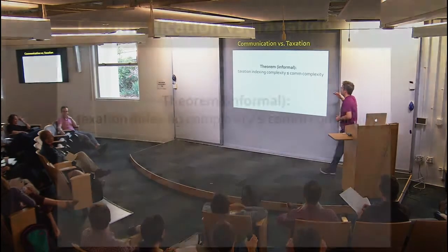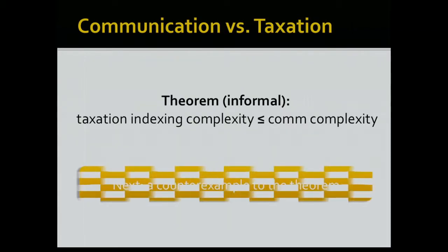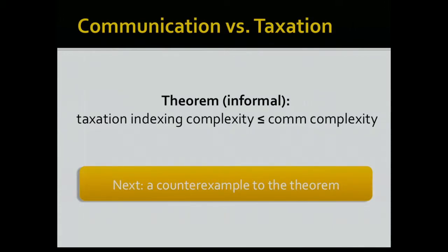The main theorem says, informally, that the taxation indexing complexity is at most the communication complexity of the mechanism. This is the main connection between the two notions. I plan to discuss some applications and extensions of this theorem, and also prove it. But first, let me give a counter-example showing that the reverse direction fails — so you appreciate it's not a trivial statement.